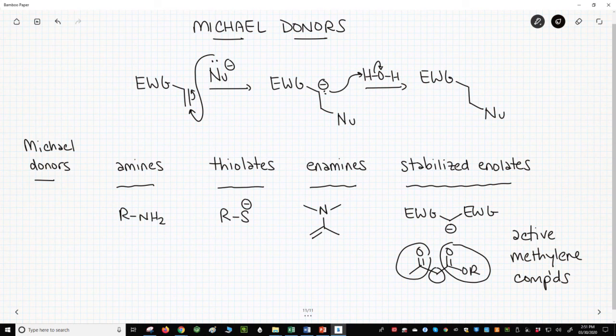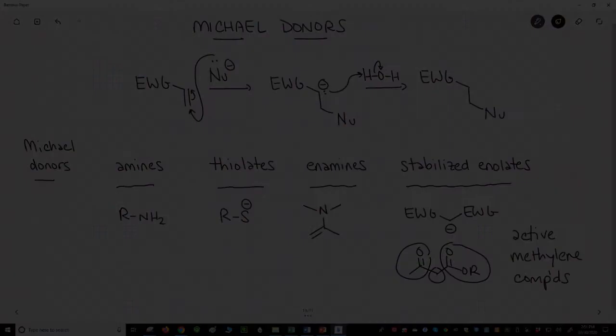So our Michael donors tend to be weaker nucleophiles: amines, thiols, enamines, and highly stabilized enolates. In contrast, the stronger nucleophiles, like hydrides and organometallics, normally prefer to do a 1,2 addition.